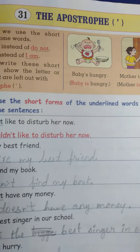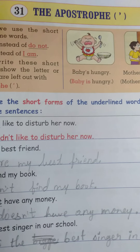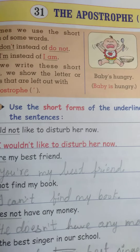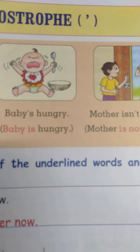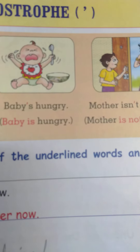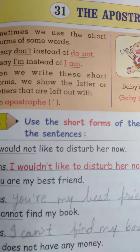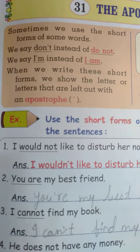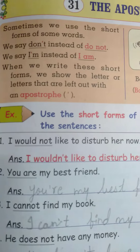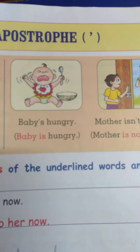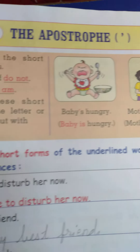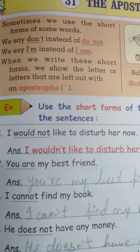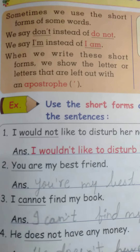Now see the next lesson, that is lesson number 31: the apostrophe. What is apostrophe? This sign is called an apostrophe. Sometimes we use the short forms of some words, and then we use this type of sign — that is an apostrophe.